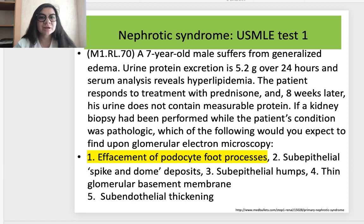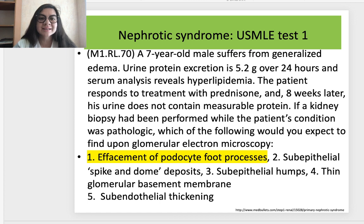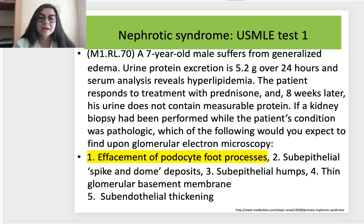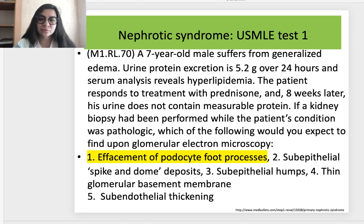Test 1 was about nephrotic syndrome. A seven-year-old male suffers from generalized edema. Urine protein excretion is 5.2 grams over 24 hours, and serum analysis reveals hyperlipidemia. The patient responds to treatment with prednisone, and eight weeks later his urine does not contain measurable protein. If kidney biopsy had been performed while the patient's condition was pathologic, which finding would you expect on glomerular electron microscopy? The correct answer is answer 1: effacement of podocyte foot processes.